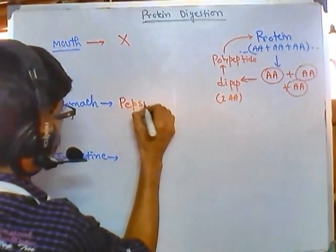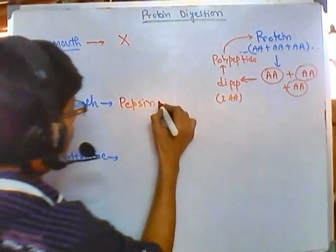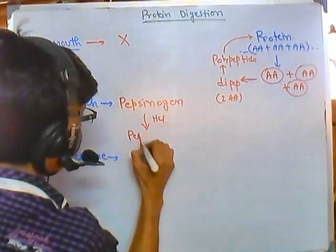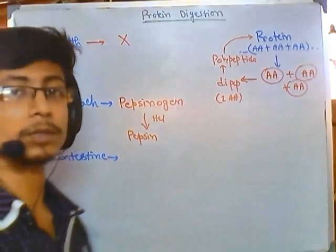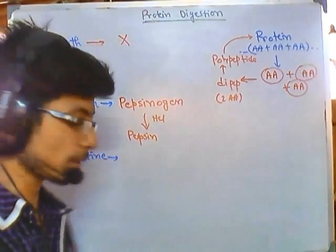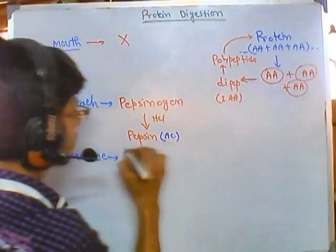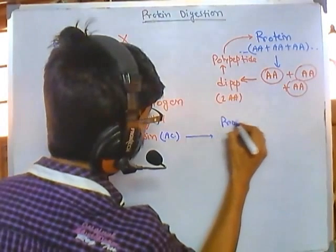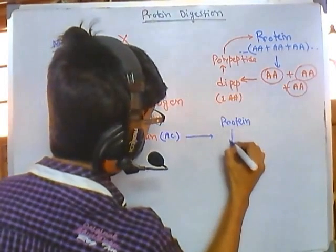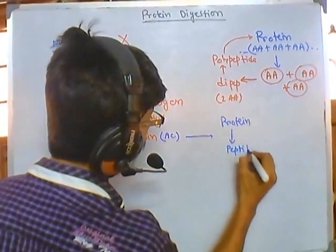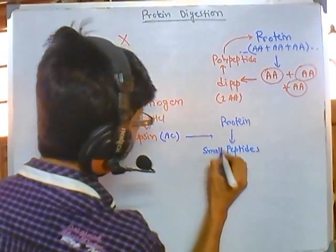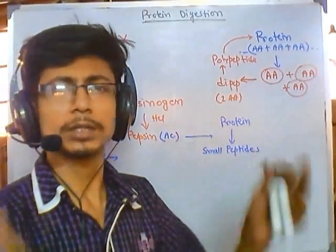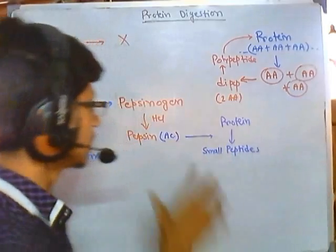Protein digestion starts at the stomach level. The stomach secretes pepsinogen, and HCl helps convert pepsinogen into its active form, pepsin. Once we get pepsin, it acts on protein and breaks it down into smaller peptides — not completely into amino acids, but into smaller fragments of around 5 to 30 amino acid sequences.